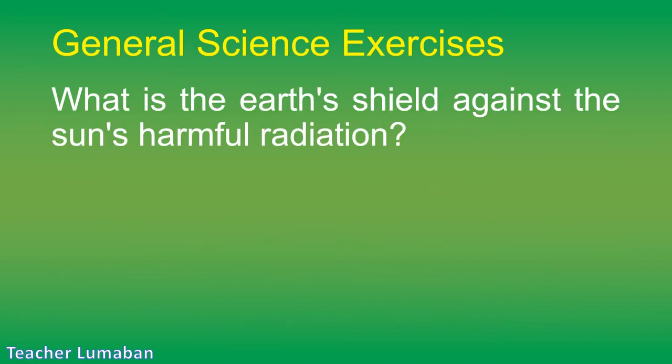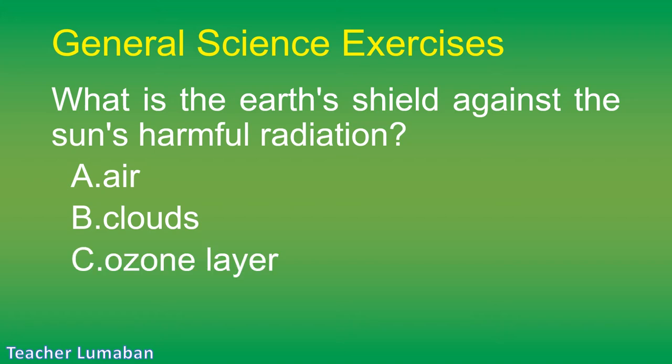What is the Earth's shield against the sun's harmful radiation? Letter A: air. Letter B: clouds. Letter C: ozone layer. Letter D: atmosphere.